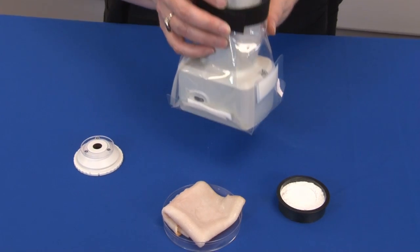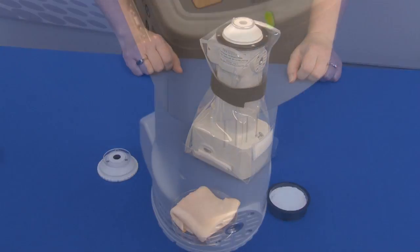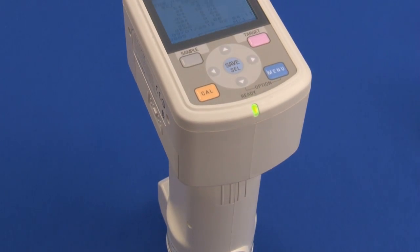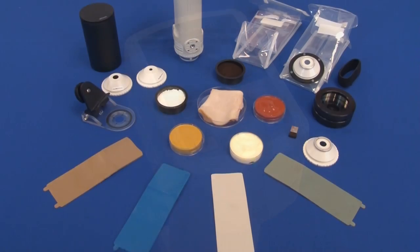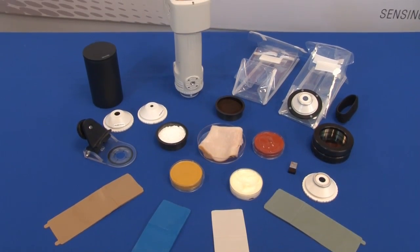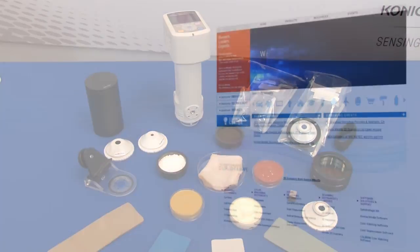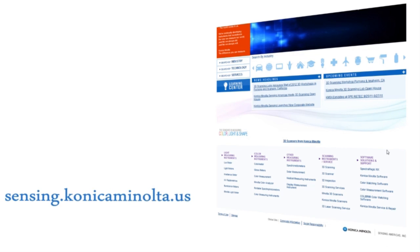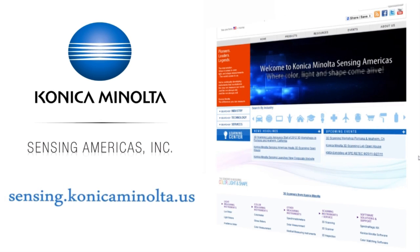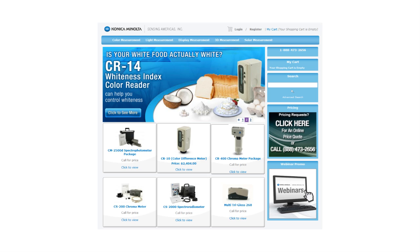Accessories are simple additions to your color measurement instrument for unique applications. For more information on Konica Minolta's color and appearance product line and accessories, please visit us online at sensing.konicaminolta.us or shop directly at shopkmsa.com.